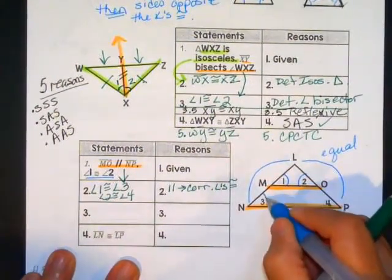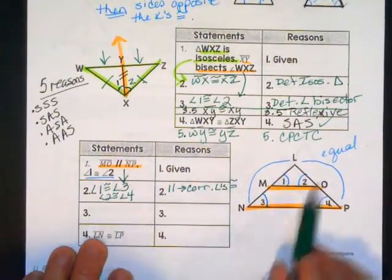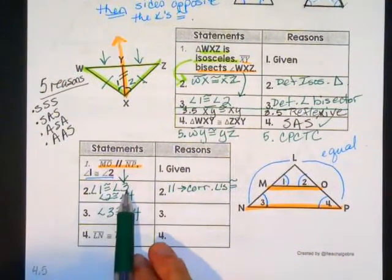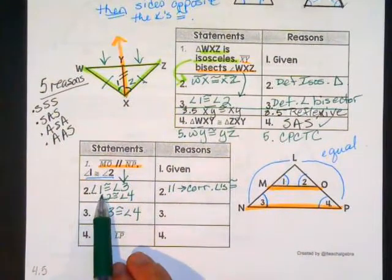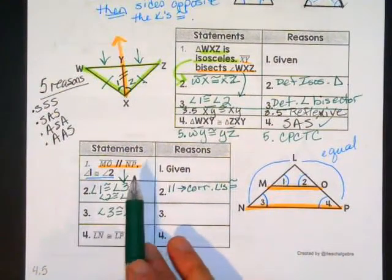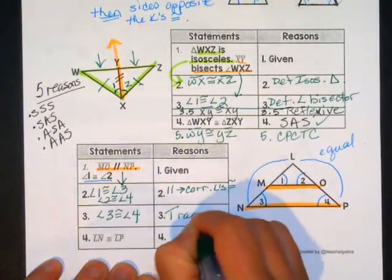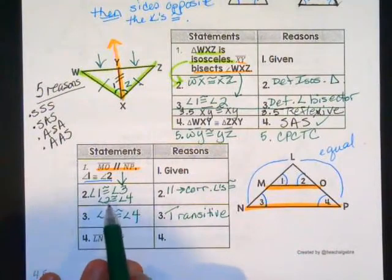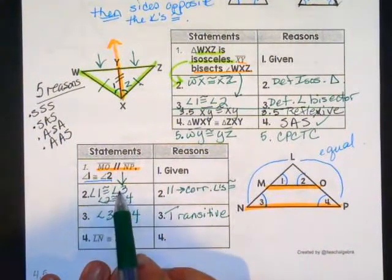The reason they gave me parallel lines was so I could say something about them. If these lines are parallel, that means angle 1 is congruent to angle 3, and angle 2 is congruent to angle 4 — those are corresponding angles. If 1 is congruent to 3 and 2 is congruent to 4, then angle 3 must be congruent to angle 4 by transitive property — going from 4 to 2 to 1 to 3, so 4 is congruent to 3.